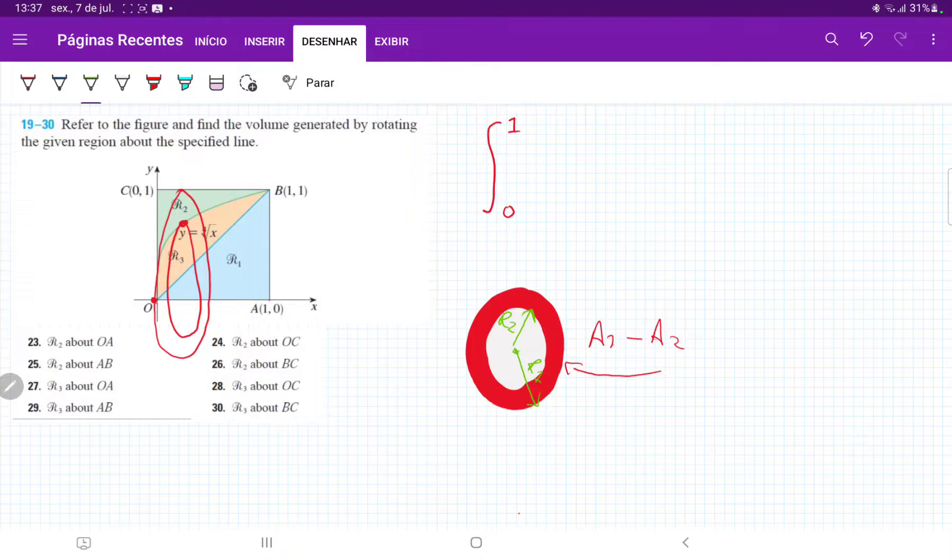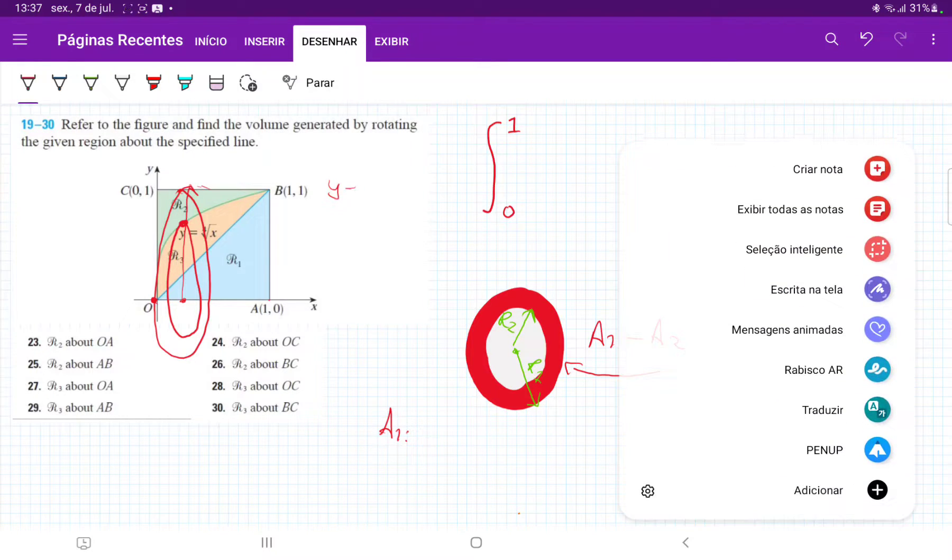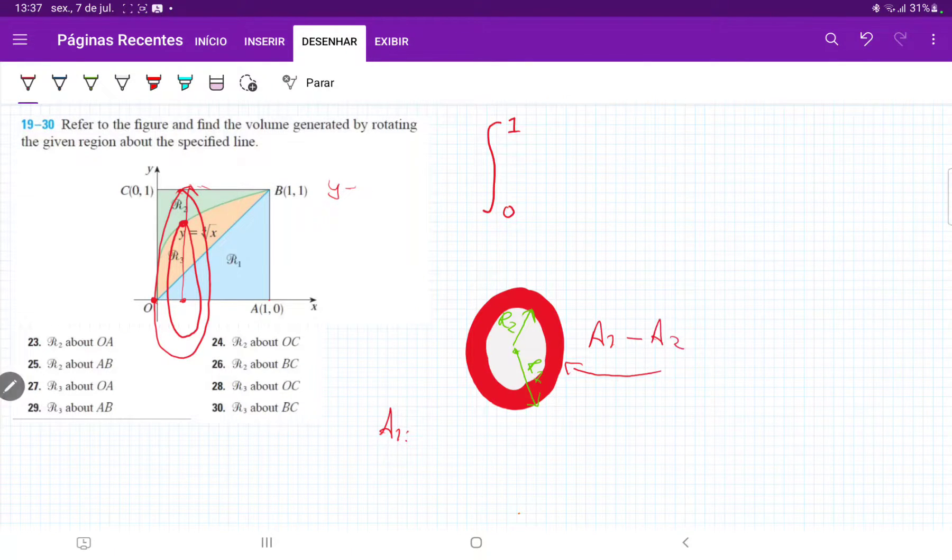So let's calculate these. Now A1, if we think about the radius, the radius will always go from OA all the way out to this part here. It will always touch this line, y equals 1, right? So what we can see here is that the outer radius will always be 1. So from here, we can say that A1 is just pi times the radius of 1, so times 1 squared.